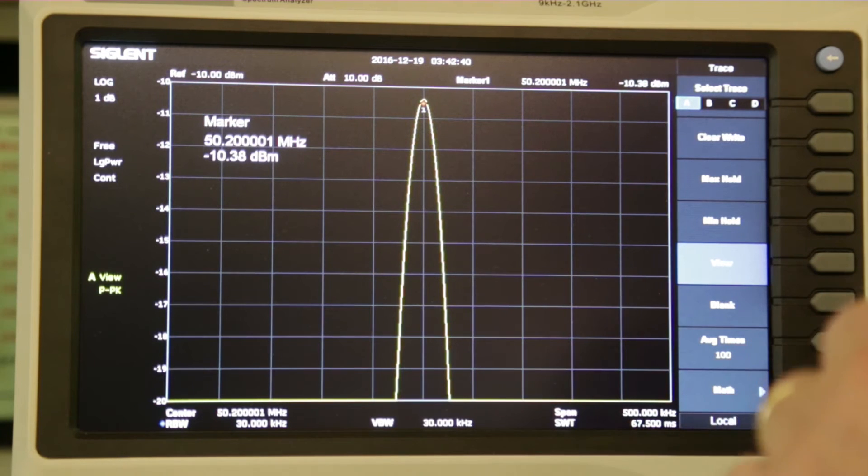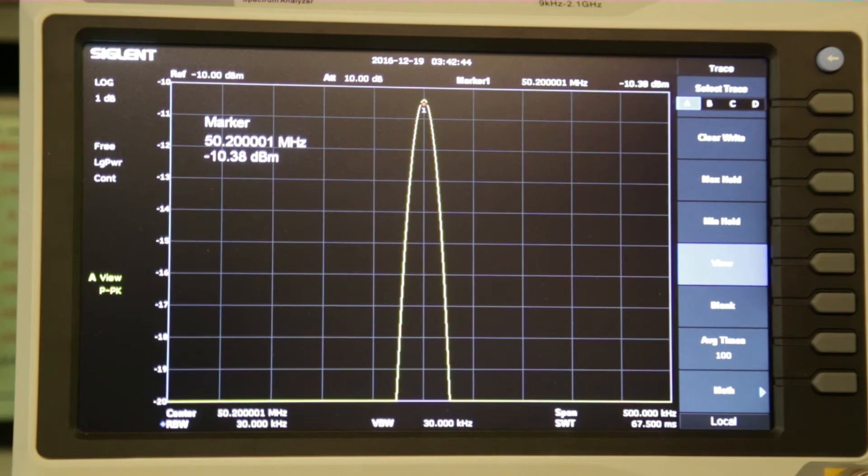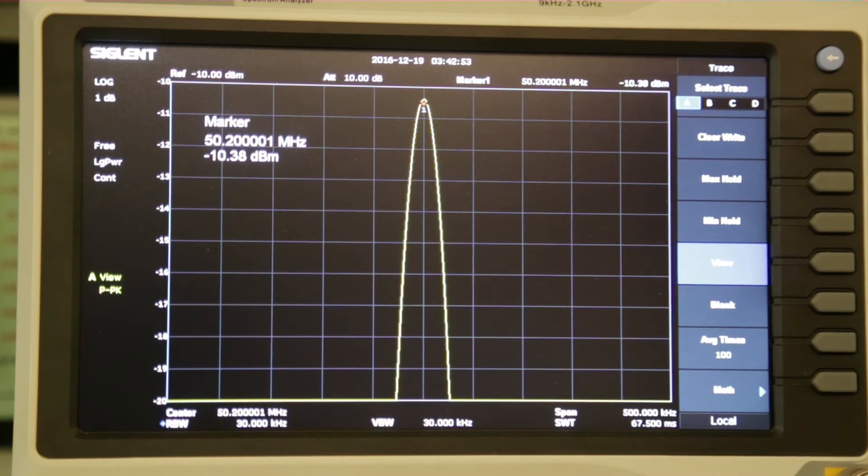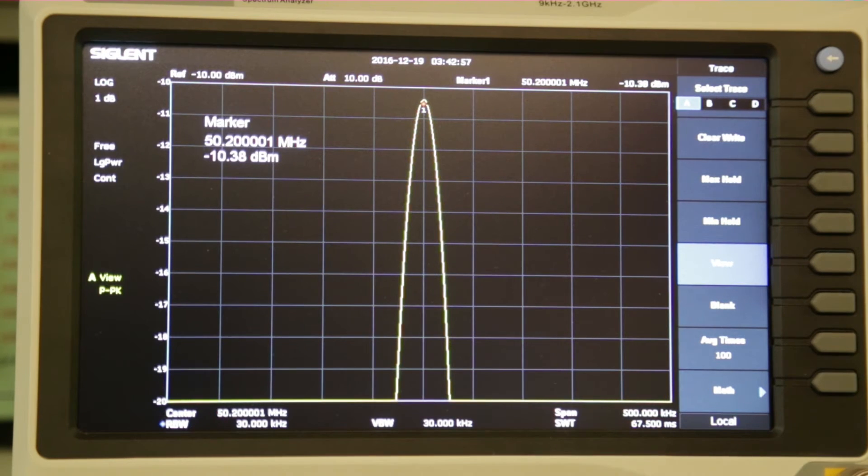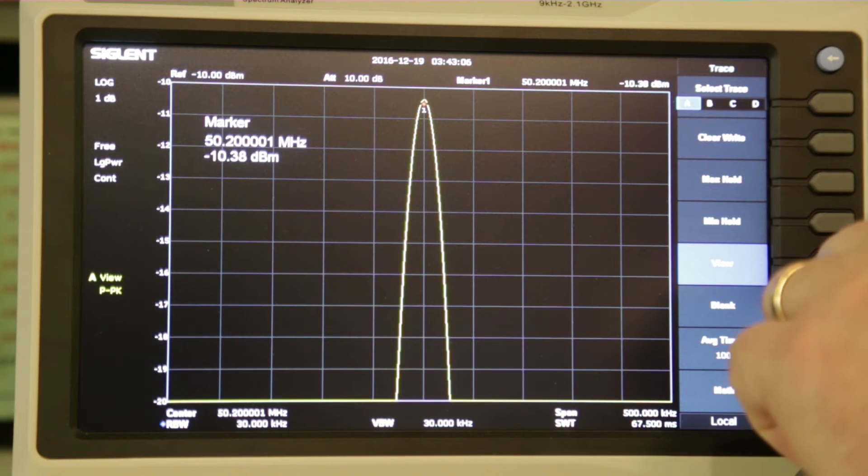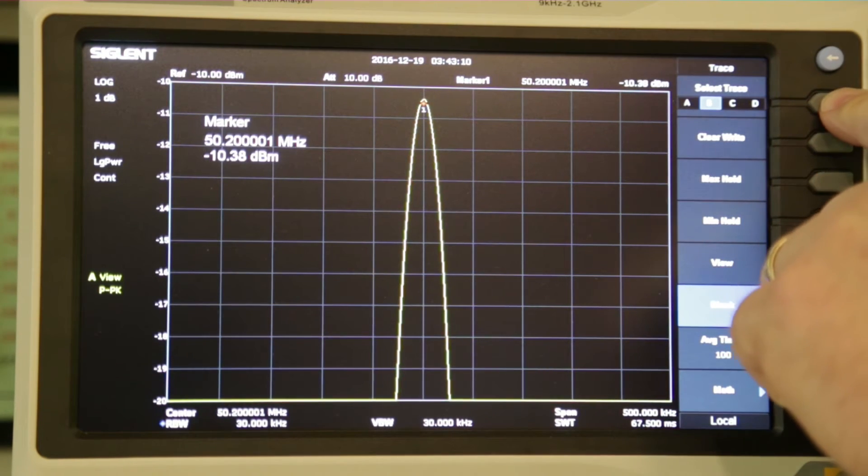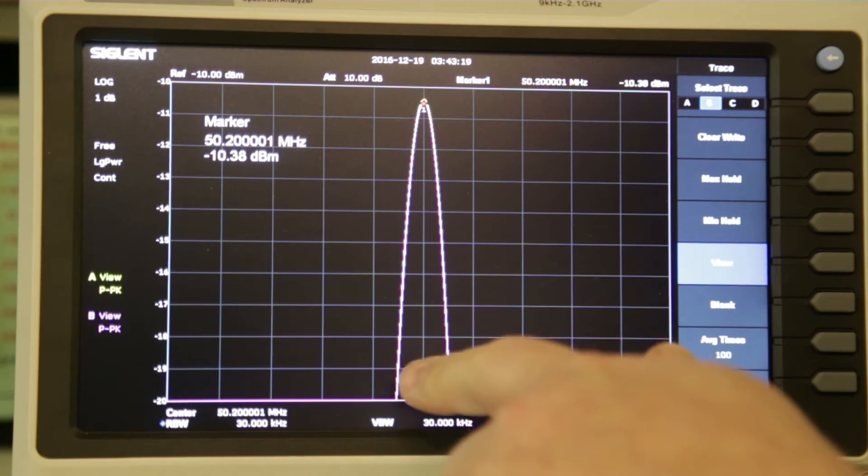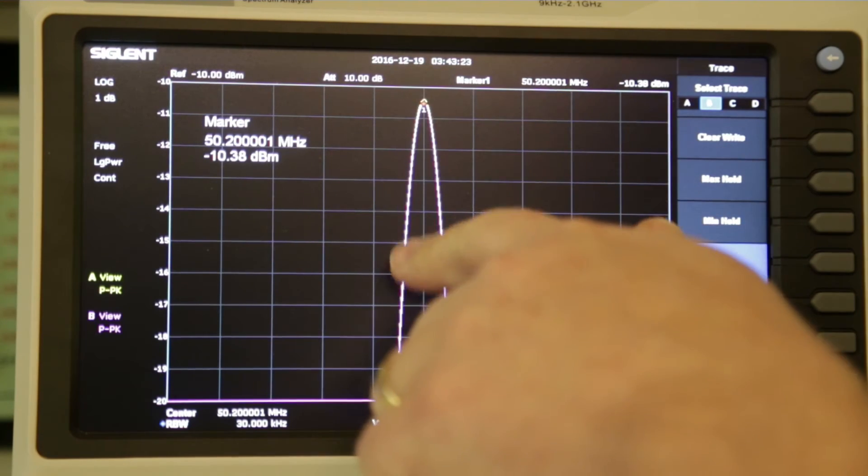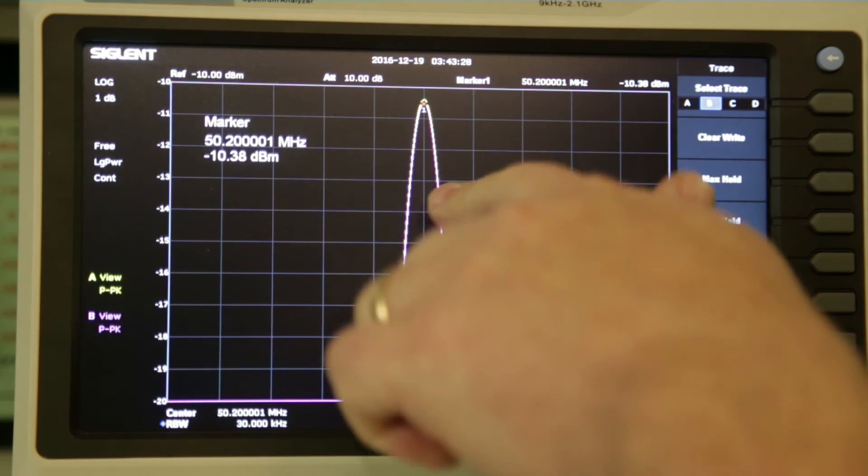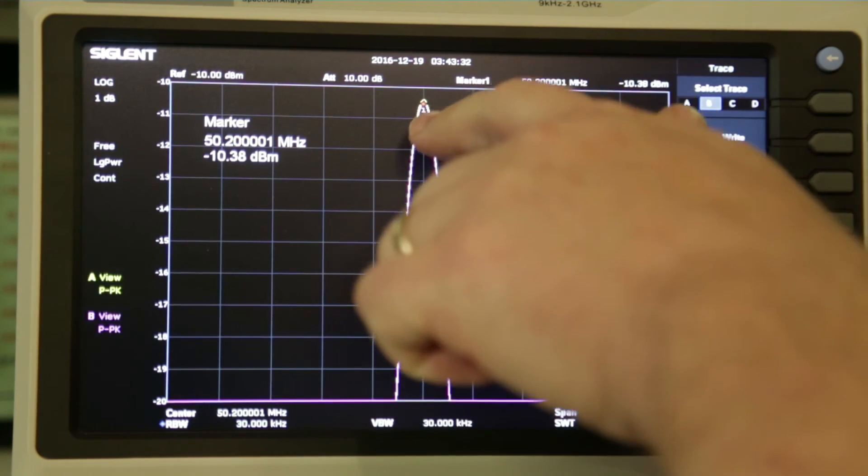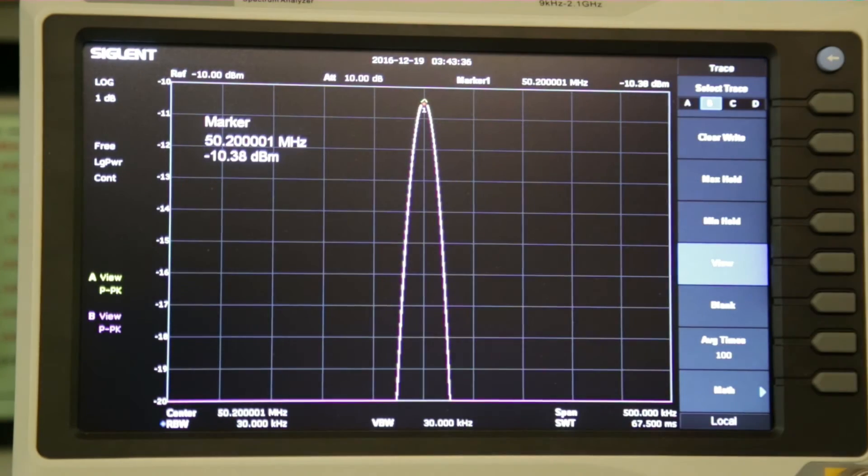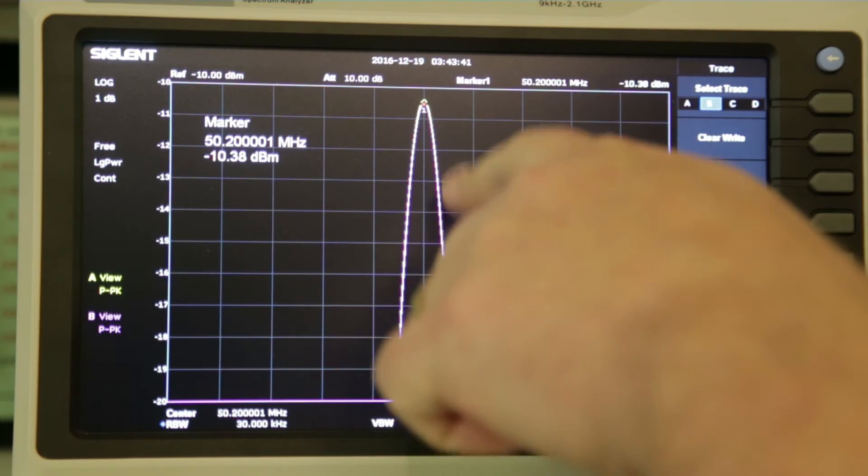What we're going to do now is go ahead and disconnect the bullet and we'll go through the low-pass filter this time. We want to select a different trace so we're going to select trace B. There you go, you can see trace B is the purple one now and it's superimposed over the first one but actually it's just an ever-so-slight touch lower.